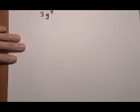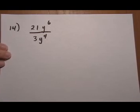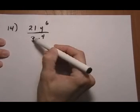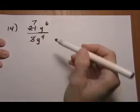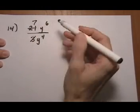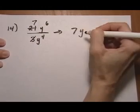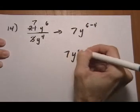And number fourteen. Twenty-one y to the sixth over three y to the fourth. Let's take care of the numbers first. Three divides into twenty-one, leaving us a seven. And then we can apply the exponent rule for the variables. So that gives us seven y to the sixth minus four. Seven y squared.